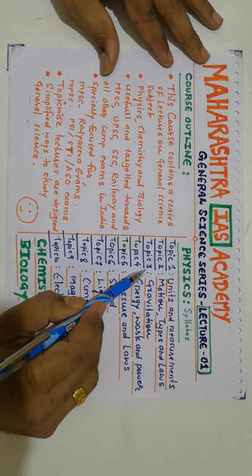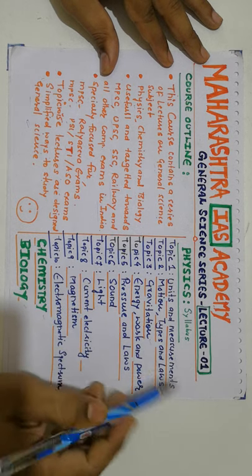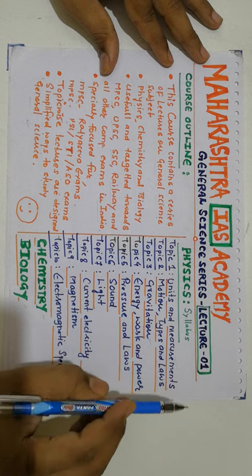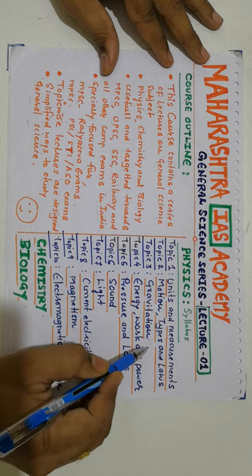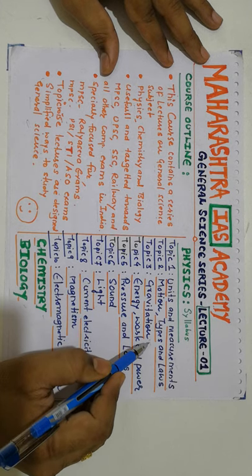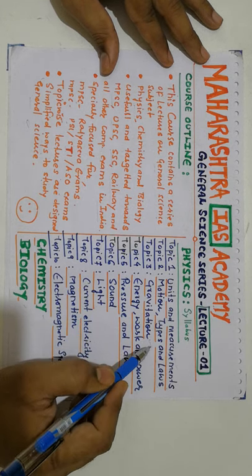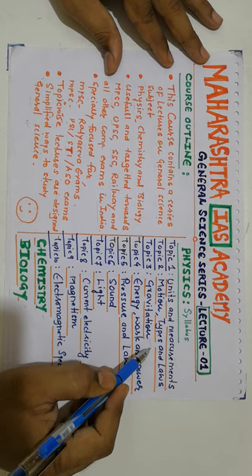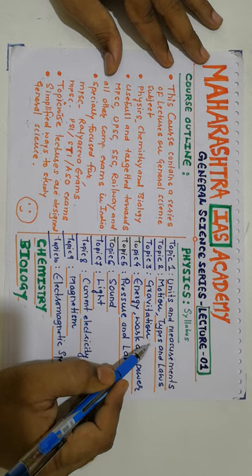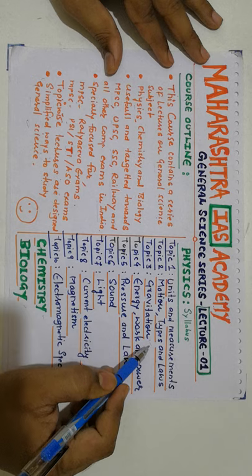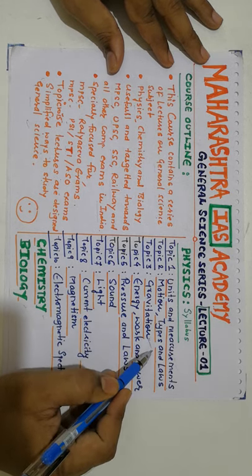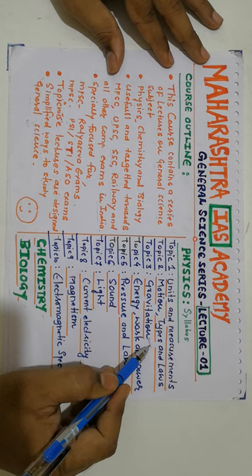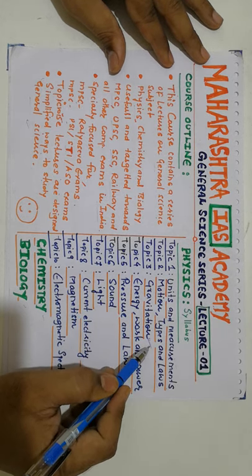Topic 3 is about gravitation — a very interesting chapter. Gravitation covers various important concepts regarding the gravity of Earth, how we have understood gravity and how we have controlled it for the betterment of our lives. This chapter contains different laws, like the universal law of gravitation put forward by Newton, and different formulas and their derivations, which are extremely important for all competitive examinations.